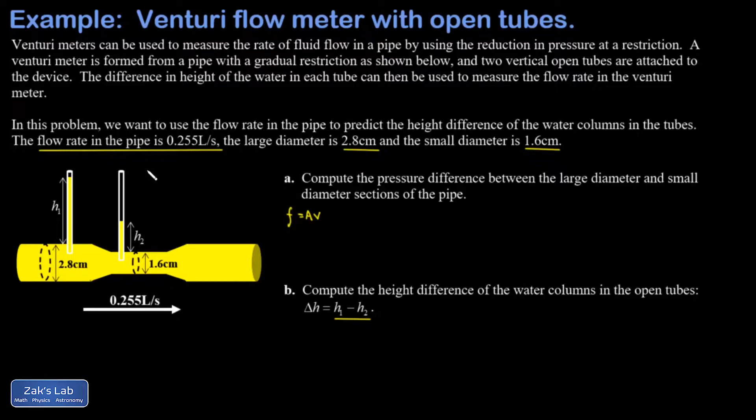First I'm going to get the cross-sectional area in each part of the pipe. A1 is the cross-sectional area for the diameter of 2.8 centimeters. Area is πr², but it's nicer to write it as one quarter π d². When you replace r with d over 2 you end up with that one quarter out in front. I get one quarter π times 0.028 meters squared, and for that first cross-sectional area I get 6.158 × 10⁻⁴ square meters.